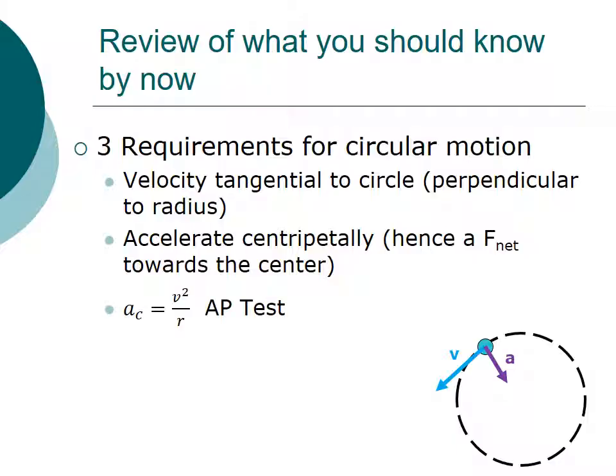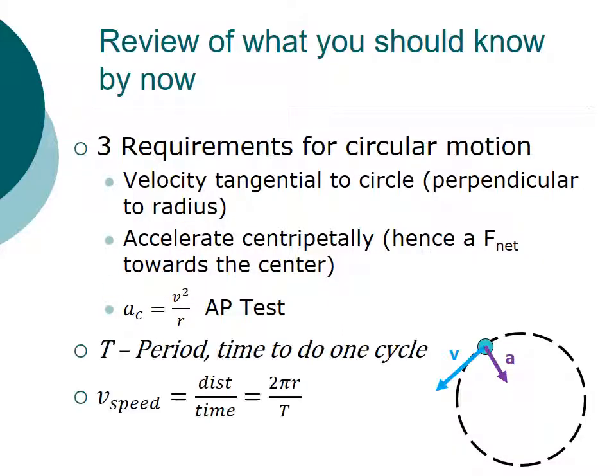Last thing is, quantitatively, there needs to be a centripetal acceleration that equals v squared over r. So this is mathematically how these variables relate together. This is how they write it on the AP test.